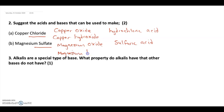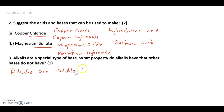This question is worth two marks — one mark for each correct combination of acid and base. Question three asks what property alkalis have that other bases do not. The answer is that alkalis are soluble bases, or that they dissolve in water. That's worth one mark.